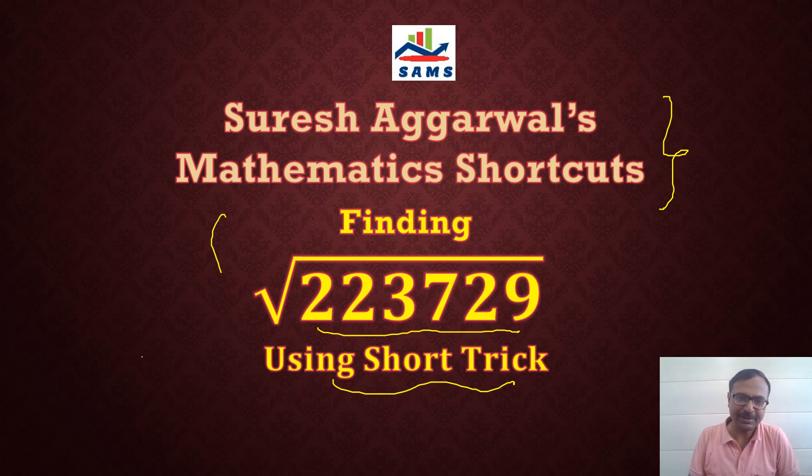The long division method is where students face the majority of problems. If you want to get rid of the fear of long division method, you need to learn something untraditional. This number 223729 which I have taken is a perfect square number, and you can find the square root very easily using this trick.